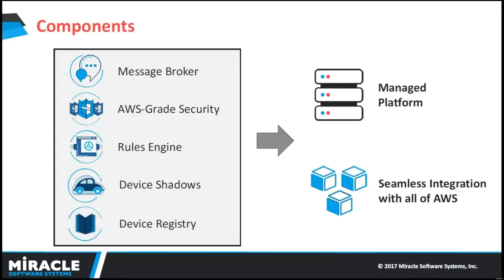Moving on to device registry — this is also important. When there are many devices, such as Raspberry Pi, BeagleBone, or Arduino, where one device is connected to two or three sensors and another device is also connected to multiple sensors, we need a device registry to manage, maintain, and manipulate all that information and keep a record of it.